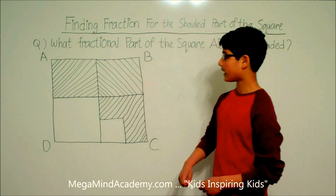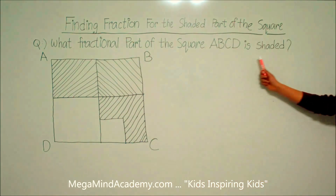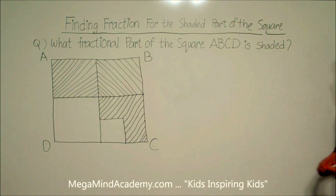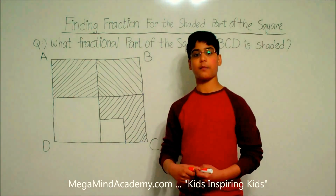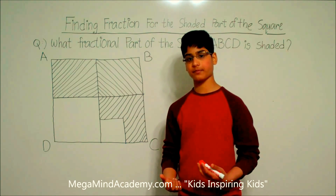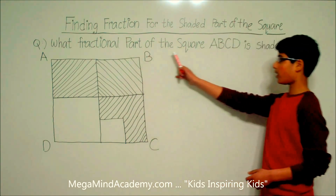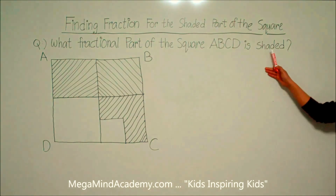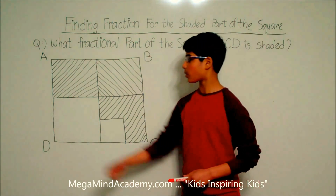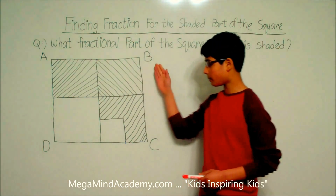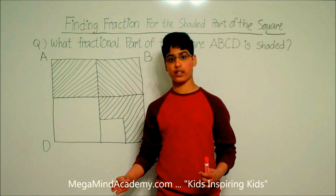Now we need to find out what fractional part of square ABCD is shaded. We know that a fraction means a part over a whole. So to find the fractional part that is shaded, we need to convert square ABCD into smaller equal squares.